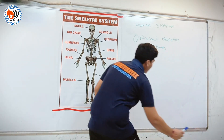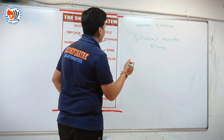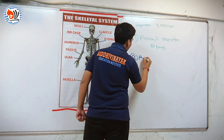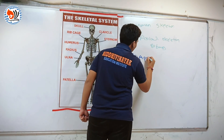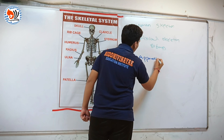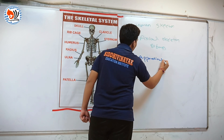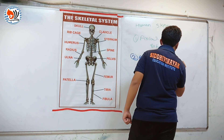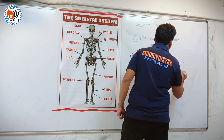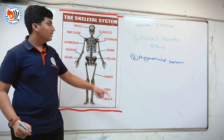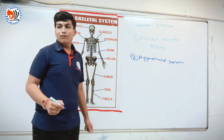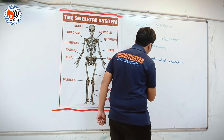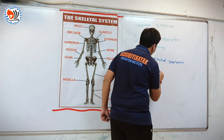Now the second type is appendicular skeleton. In appendicular skeleton there are 126 bones.